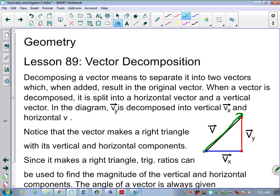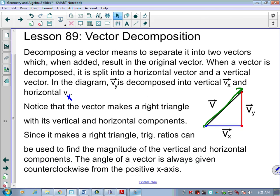When a vector is decomposed, it's split into a horizontal vector and a vertical vector. In the diagram, what we see is Vy is decomposed into vertical and Vx into that horizontal. Notice that the vector makes a right triangle, which is going to be helpful, with its vertical and horizontal components. Since it makes a right triangle, trig ratios can be used to find the magnitude of the vertical and horizontal components. In the end, what does magnitude really mean? Distance. So we're solving for distance.